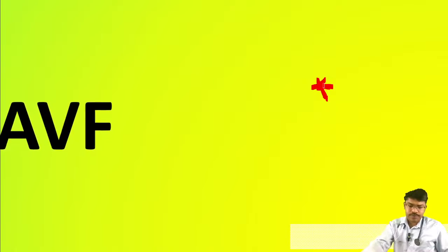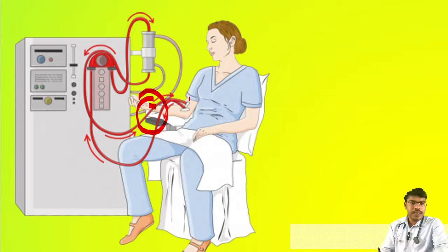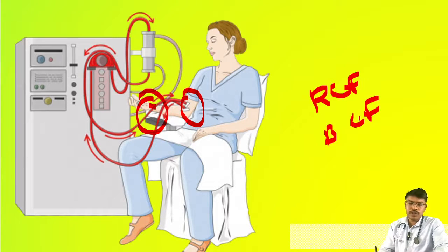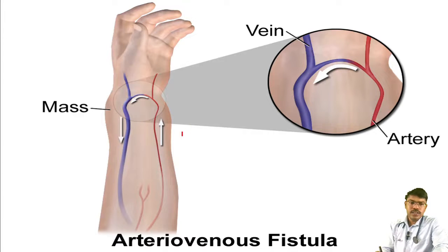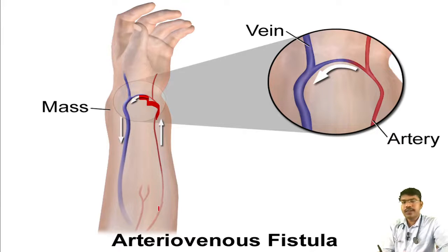It is the duty of the dialysis technologist or nurse to know what things to look for whenever the patient comes for dialysis with an AV fistula. The patient might have a radiocephalic fistula, brachiocephalic fistula, or brachiobasilic fistula. Most commonly, radiocephalic and brachiocephalic fistulas are the ones you will be encountering. The radial artery or brachial artery will be connected to the cephalic vein.